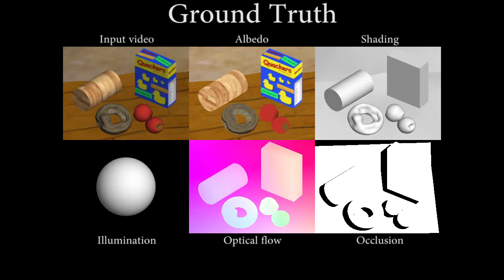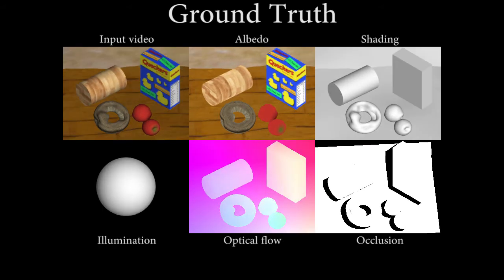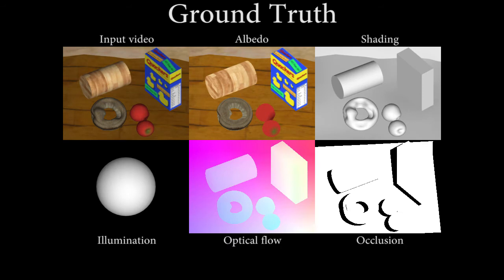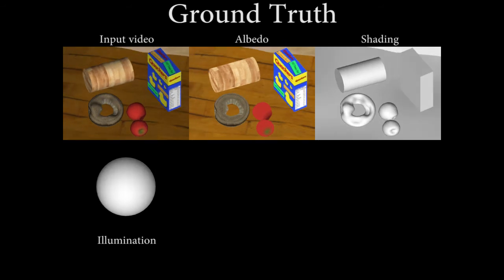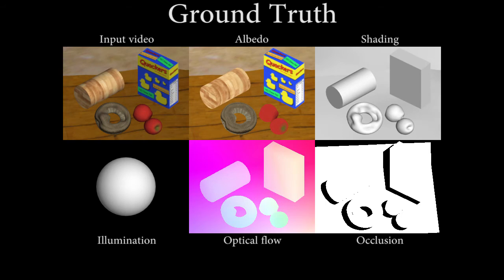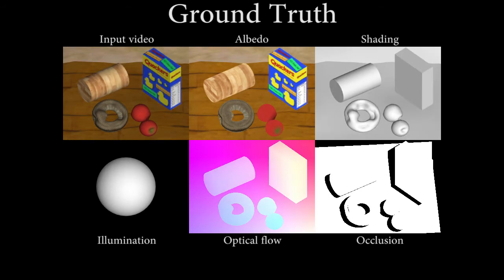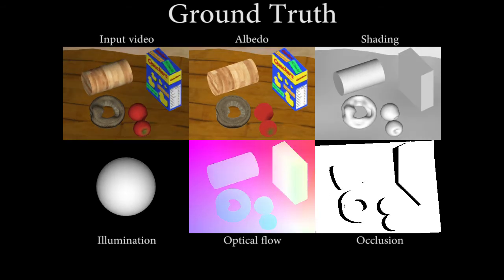In this example, a camera is freely moving, and illumination varies significantly over time. Here, we show the input video and its corresponding ground truth, albedo, shading, optical flow and occlusion. The illumination sphere simply visualizes the varying lighting during the video.